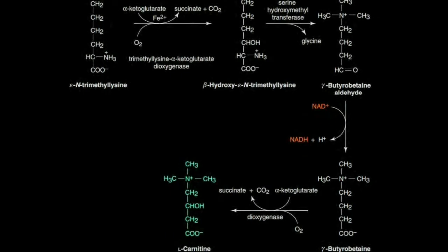The biosynthesis of carnitine starts with trimethylation of lysine, meaning three methyl groups are added to lysine — specifically to the epsilon amino group. The donor of those methyl groups is the active form of methionine, that is S-adenosyl methionine, or SAM. SAM supplies the three methyl groups added to the epsilon amino group of lysine to form trimethyl lysine.